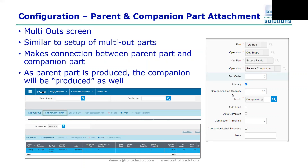Within your companion part setup screen, you set a companion part quantity. In this example, for every tote bag cut at the cut operation, we'll have a half a foot of excess fabric, and this half foot of fabric will be moved into inventory as we complete this operation for our parent part. There is also a setup table called multi-out mode that allows you to define your companion part — you'll create an entry called 'Companion' or 'Companion Part' — and I'll show you what that looks like within the PLEX system.